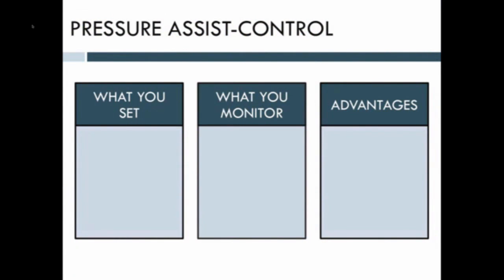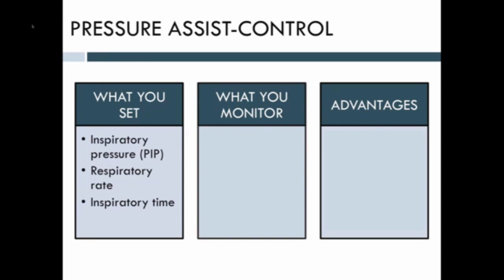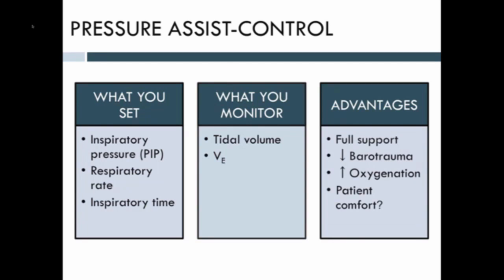Let's review pressure assist control. Going back to our original premise, in this mode you set the pressure by setting an inspiratory pressure and an inspiratory time. You apply a pressure for, say, one second, and given the compliance of the lungs, you'll get a tidal volume. You monitor the tidal volume and the minute ventilation. Advantages include the ability to mandate a given minute ventilation and provide full support. Also, because you're limiting the maximum pressure, you can reduce barotrauma. By increasing the inspiratory time, you can improve oxygenation. Some people think pressure assist control is more comfortable for patients for these reasons.